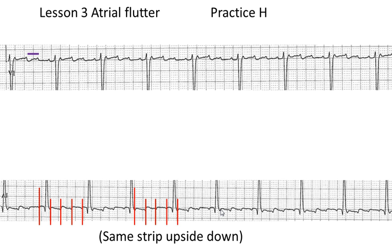We want to remember that flutter waves continue under T waves and under QRSs. The atrial flutter waves are occurring in the atria and have nothing to do with the QRSs and the Ts, so they're going to be landing on top of each other — two things happening simultaneously.